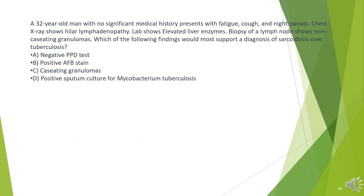A 32-year-old man with no significant medical history presents with fatigue, cough, and night sweats. Chest X-ray shows hilar lymphadenopathy. Lab shows elevated liver enzymes. Biopsy of a lymph node shows non-caseating granulomas. Which of the following findings would most support a diagnosis of sarcoidosis over tuberculosis?